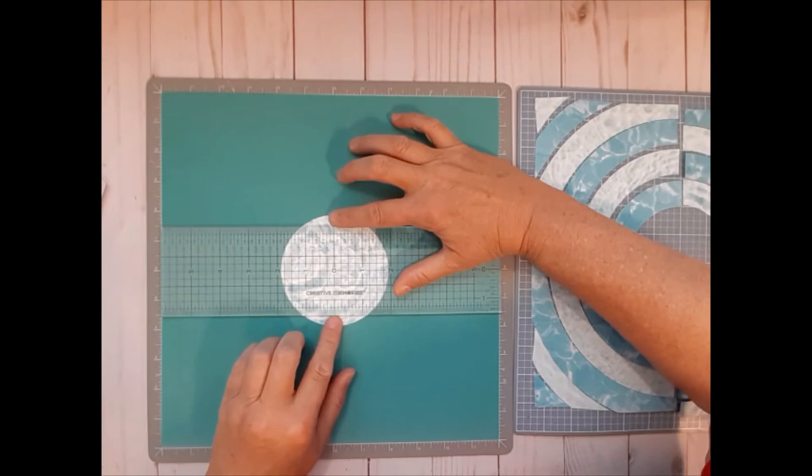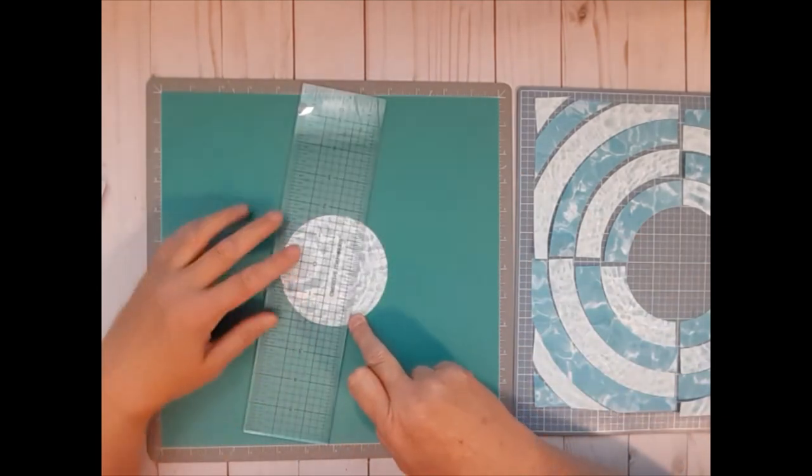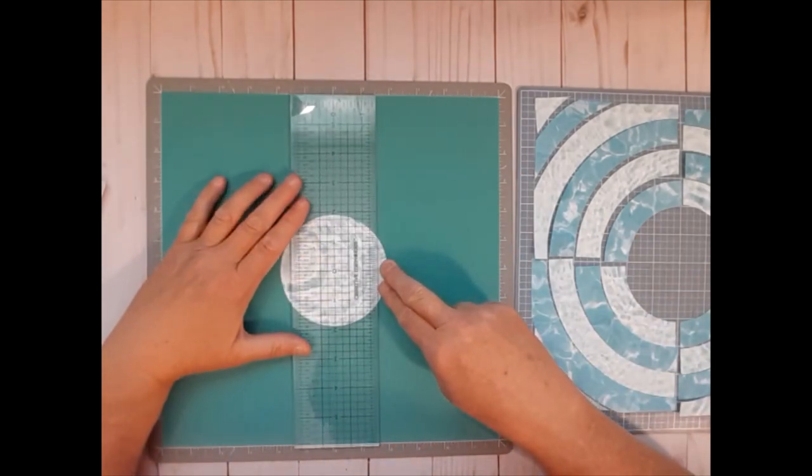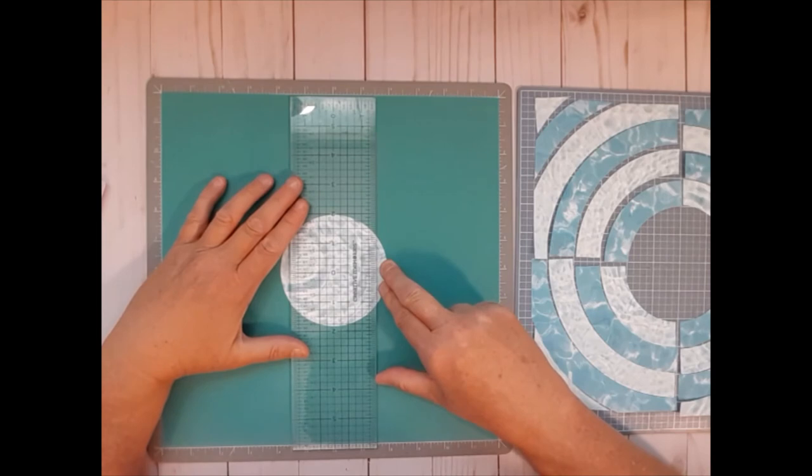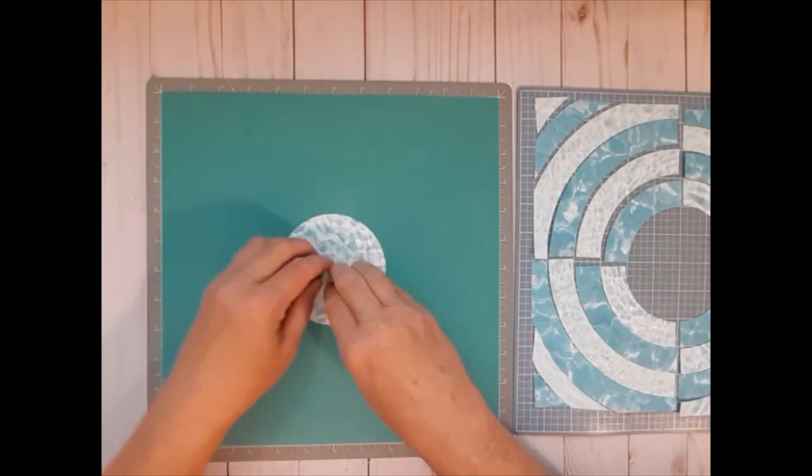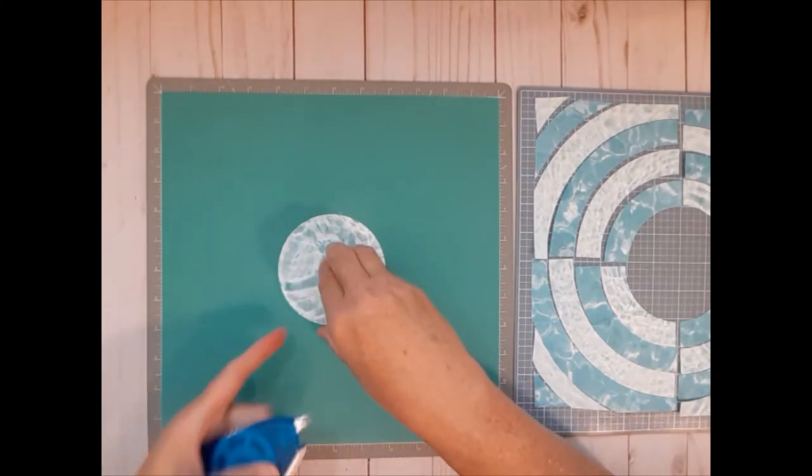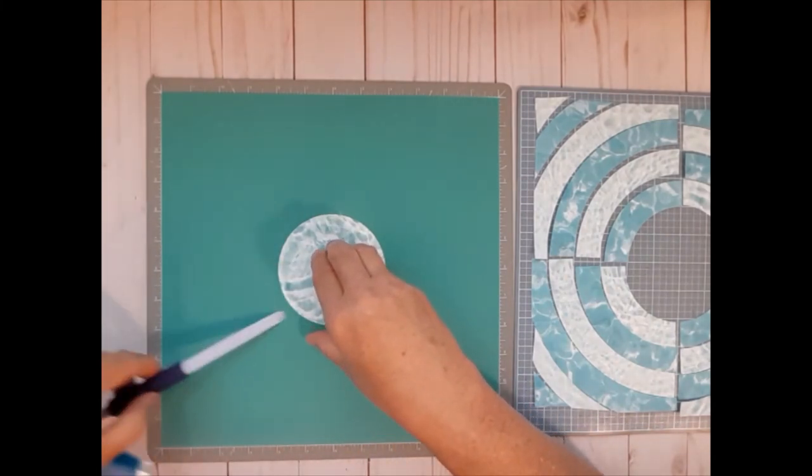So we are going to go over this way just a little bit. And then we are going to rotate the ruler again. And we are going to check our vertical. That looks good. So that one is where we want it to be. Time for some fun adhesive, eh?